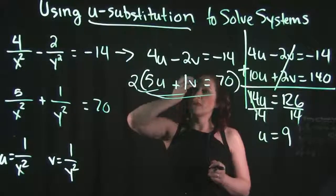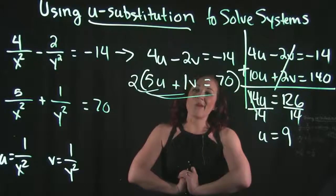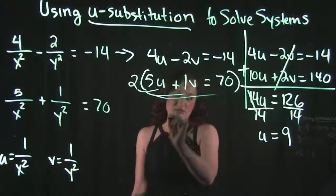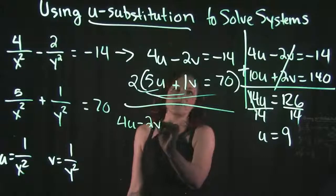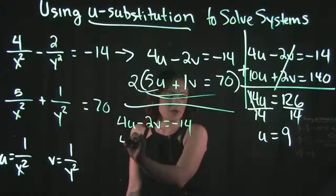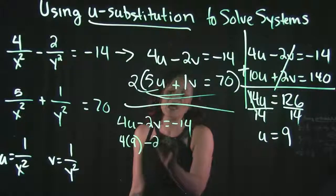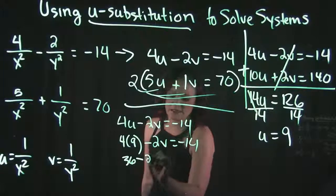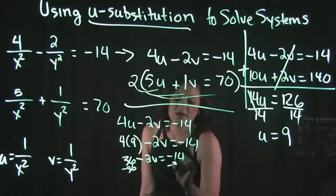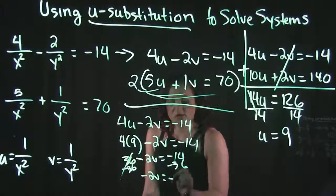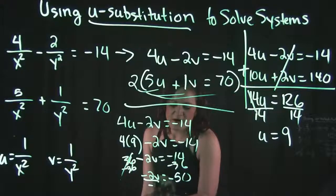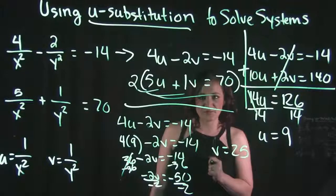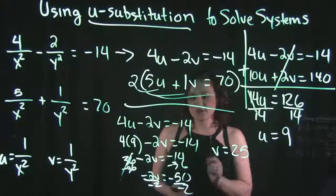Now that u equals 9, I can back-substitute into one of our equations after the substitution. I'll use the top equation: 4u minus 2v equals negative 14. Plugging in u equals 9, I get 36 minus 2v equals negative 14. Moving 36 to the other side gives negative 2v equals negative 50. Dividing both sides by negative 2, we get v equals positive 25. I'll pause and clear up some space on the screen to wrap up this problem.